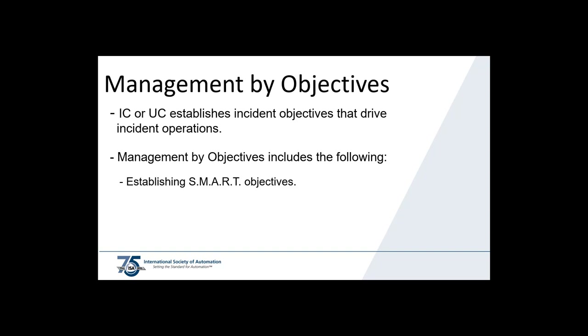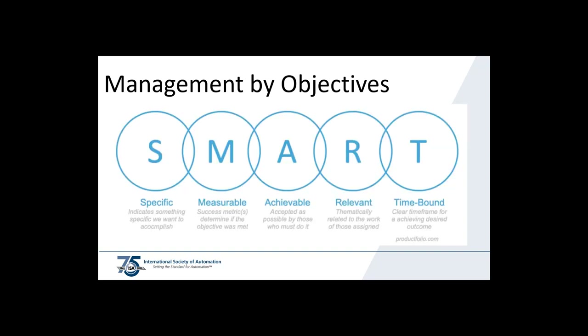Management by objectives includes establishing SMART objectives: Specific — a detailed explanation of what we want to accomplish; Measurable — what metrics we'll use to confirm the objective is met; Achievable — the task must be possible; Relevant — the objective must help solve the problem; and Time-bound — we must set a realistic timeframe to accomplish the necessary tasks.